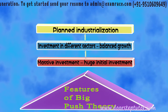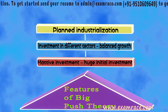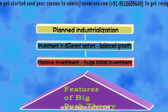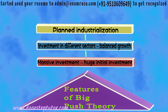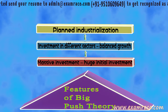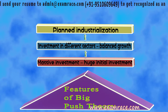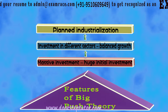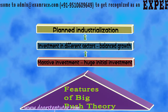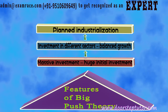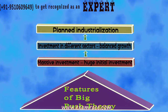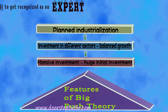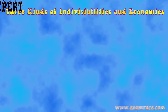The third feature is planned industrialization. In most underdeveloped and less developed countries, agriculture is the dominant sector, and these are poor countries with low per capita income and low savings. Planned industrialization reduces the uncertainties that come with agricultural production.